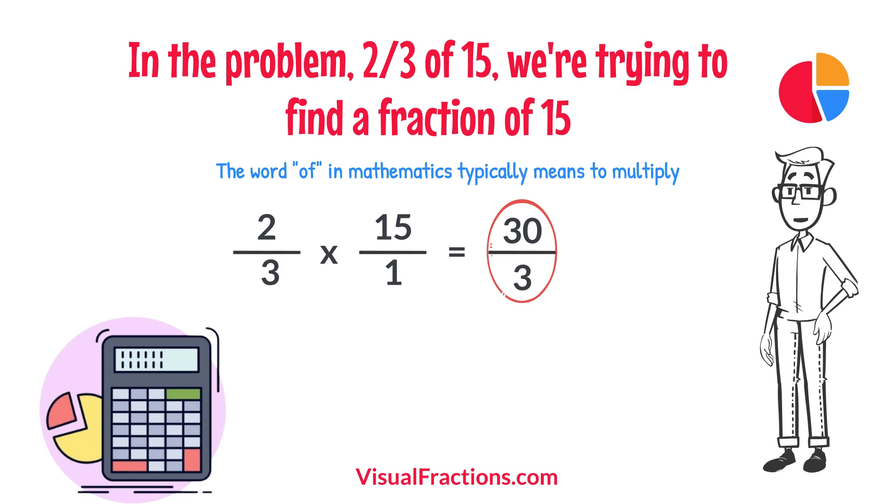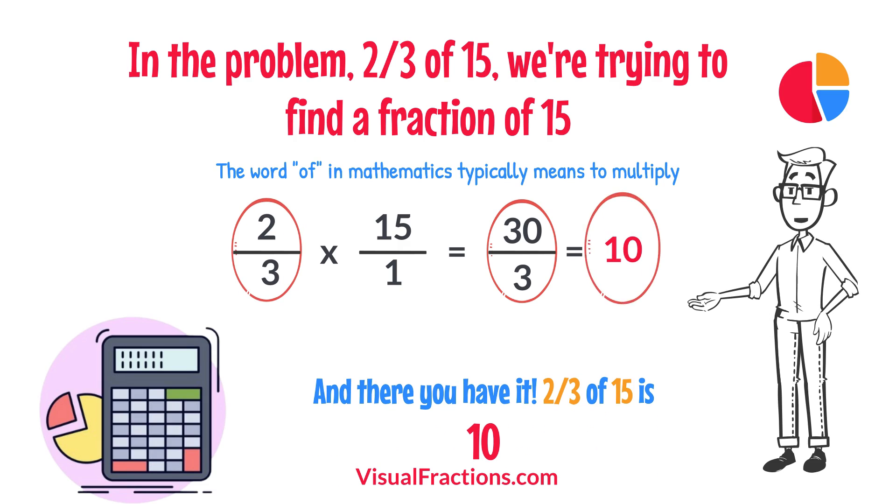To find the final answer, divide the numerator by the denominator. So, 30 divided by 3 equals 10. And there you have it. Two-thirds of 15 is 10.